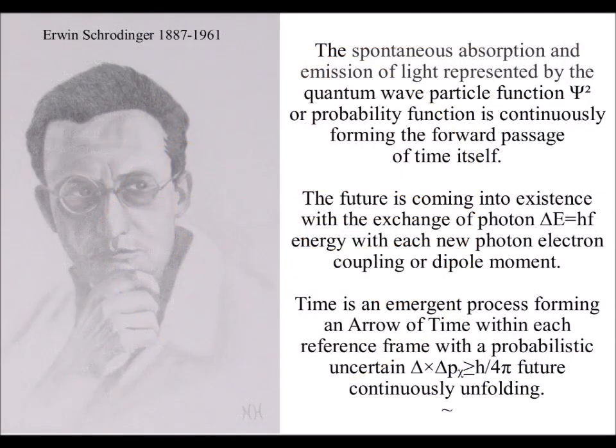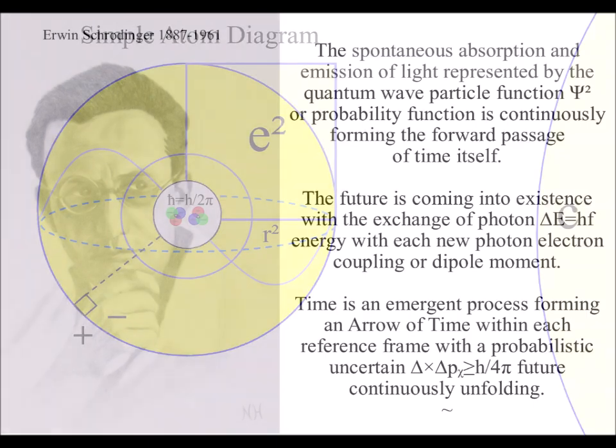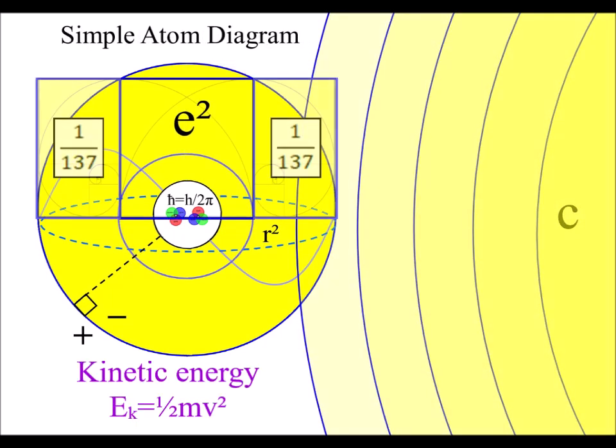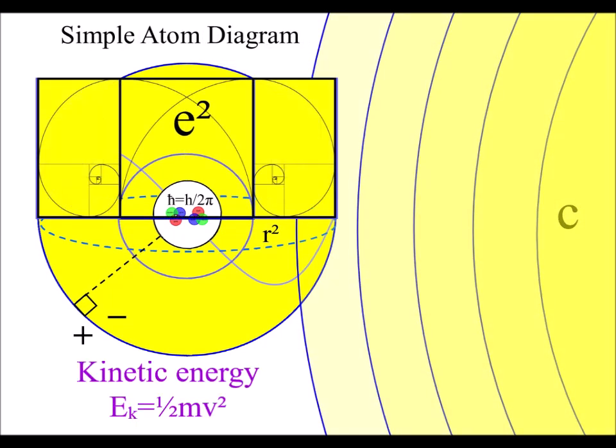the quantum wave particle function, forming a square of probability, with potential photon energy continuously transforming into kinetic energy of matter in the form of electrons.